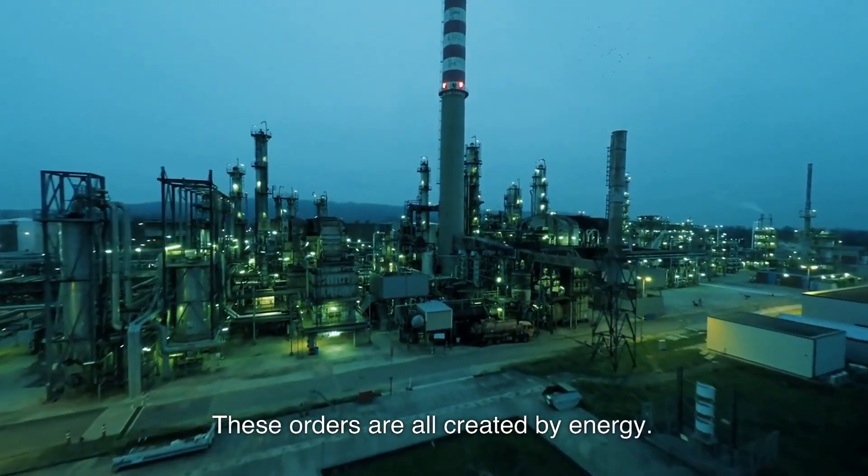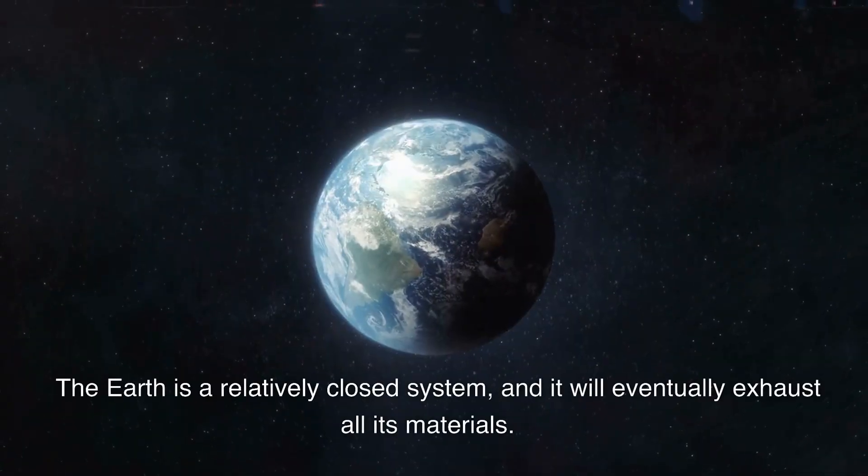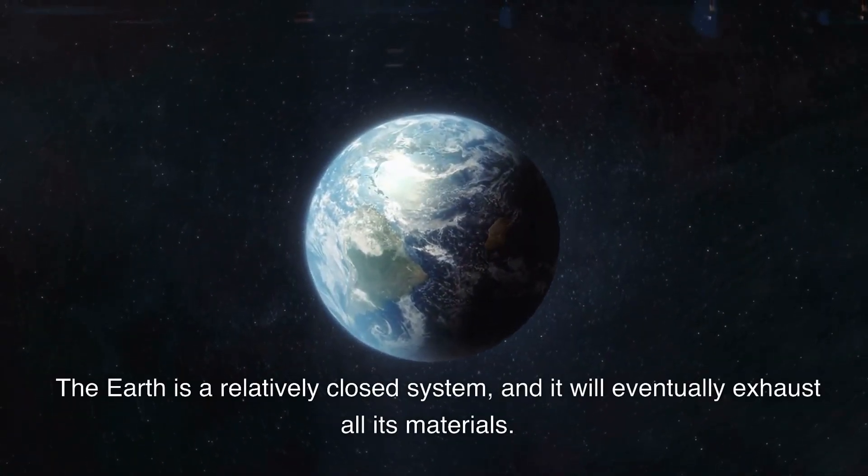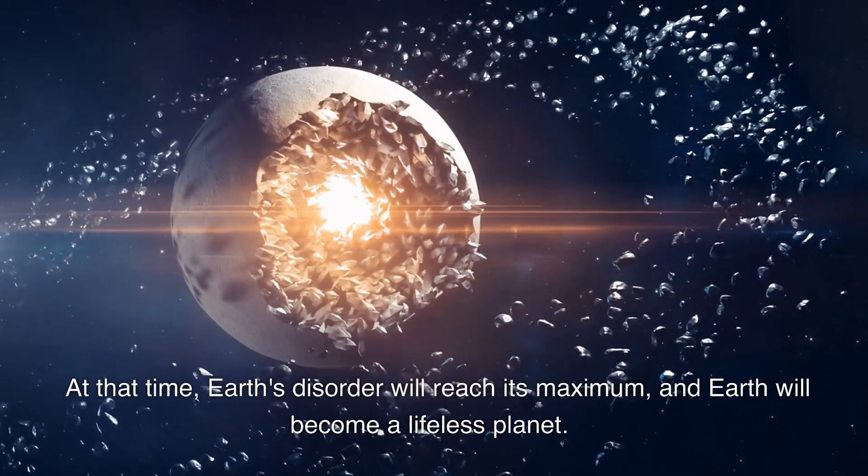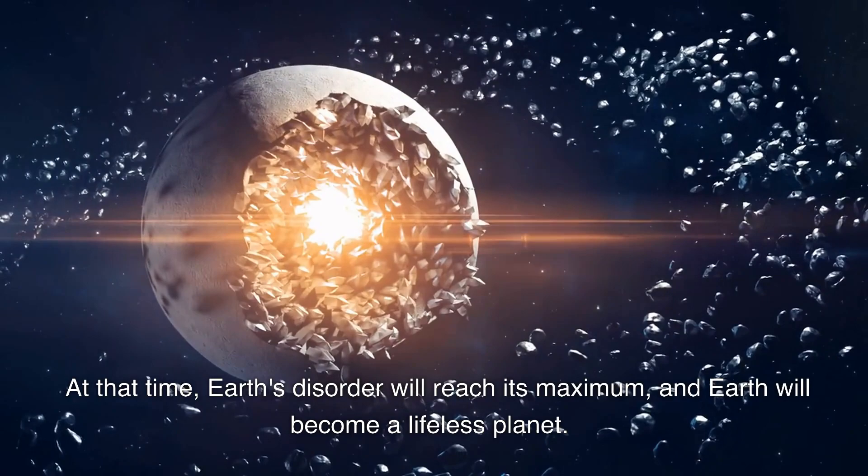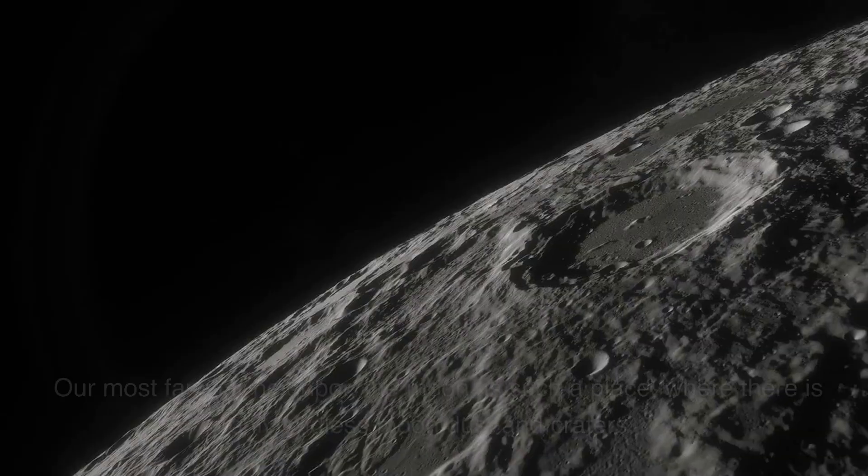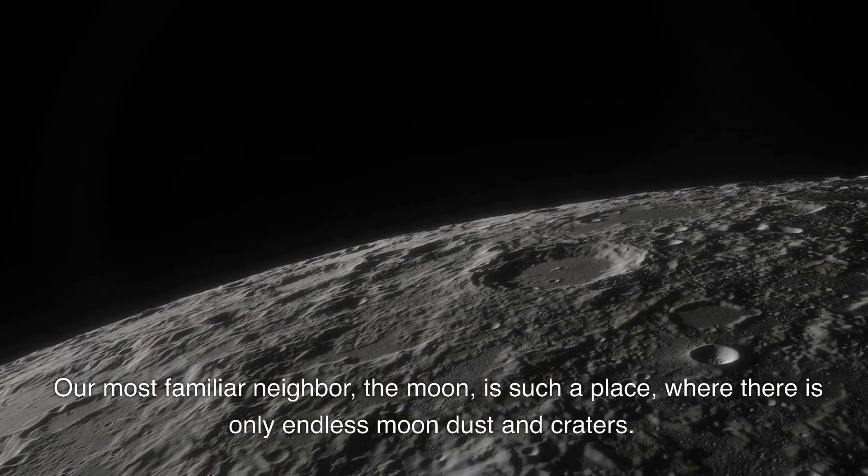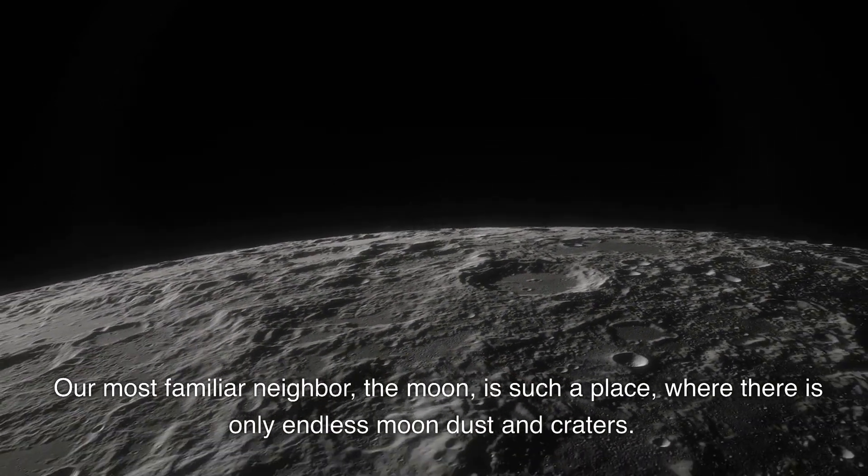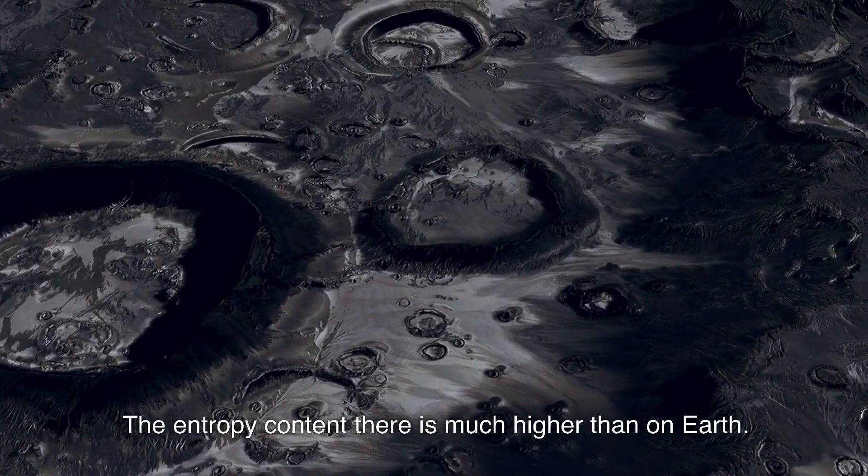The Earth is a relatively closed system, and it will eventually exhaust all its materials. At that time, Earth's disorder will reach its maximum, and Earth will become a lifeless planet. Our most familiar neighbor, the Moon, is such a place where there is only endless moon dust and craters. The entropy content there is much higher than on Earth.